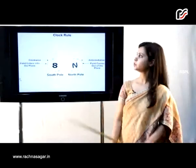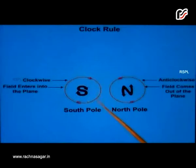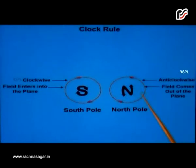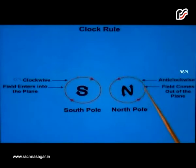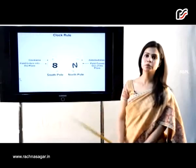Let us understand the clock rule. In the south pole, according to the clock rule, the field enters the plane and it is in the clockwise direction. In the north pole, the field comes out of the plane and is anticlockwise. Therefore, from the north pole, the magnetic lines emerge out and merge in the south pole.